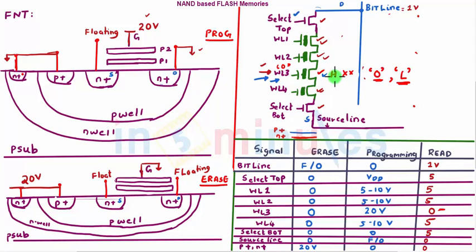So we have seen that NAND-based flash memories use Fowler-Nordheim tunneling for both programming and erasing. In the next clip we will do a comparison between NOR-based and NAND-based flash memories. I hope you have followed — stay tuned and thank you very much.